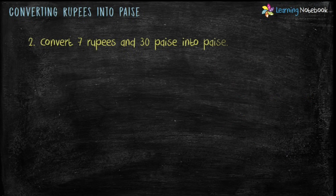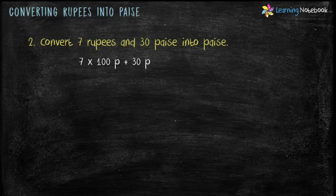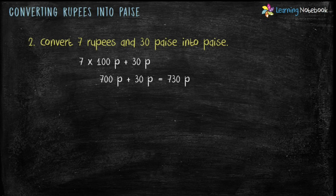Second question: convert 7 rupees and 30 paise into paise. To convert rupees into paise, multiply by hundred. So here, 7 rupees and 30 paise will be 7 × 100 + 30 paise. 7 × 100 equals 700, so 700 paise + 30 paise equals 730 paise. So we have converted rupees and paise into paise.